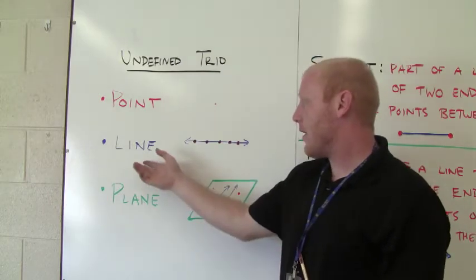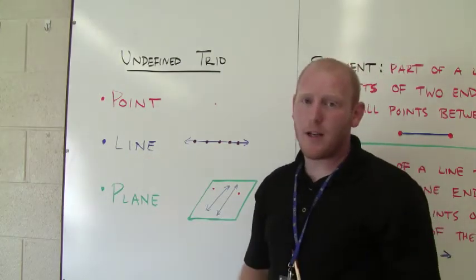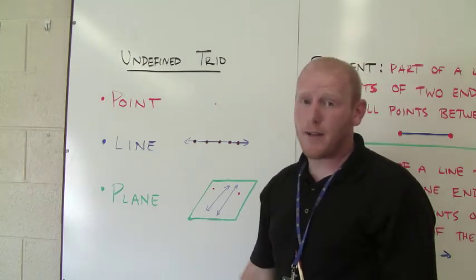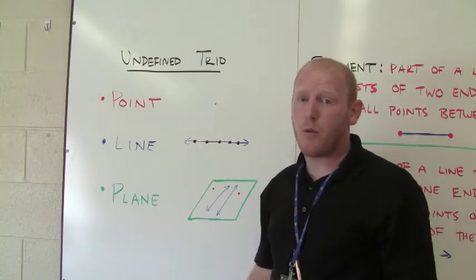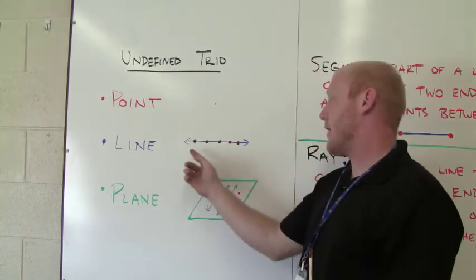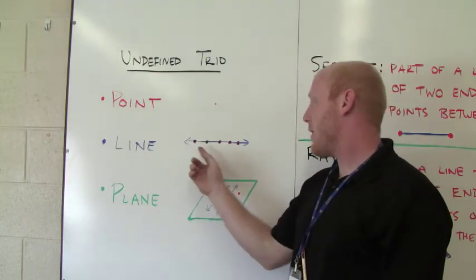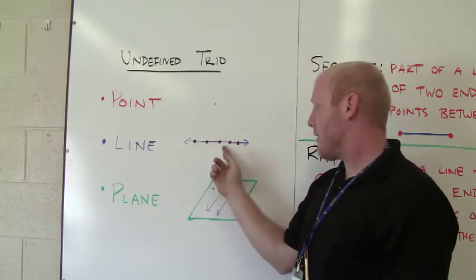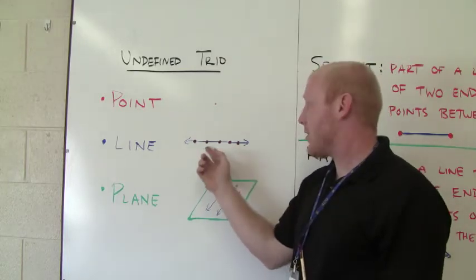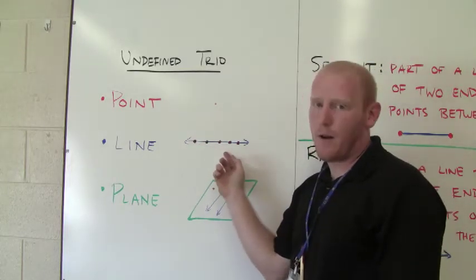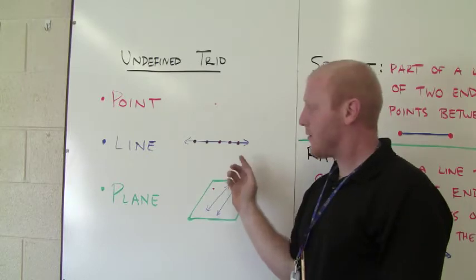The second one is a line. Now some of you are 16 and might be going to the DMV soon. It's going to seem like the line goes on forever, and that's the most important part about a line — it goes forever in both directions. That's why I have an arrow here and an arrow there. What a line actually is, is a bunch of infinite points on it, but it goes forever in both directions.